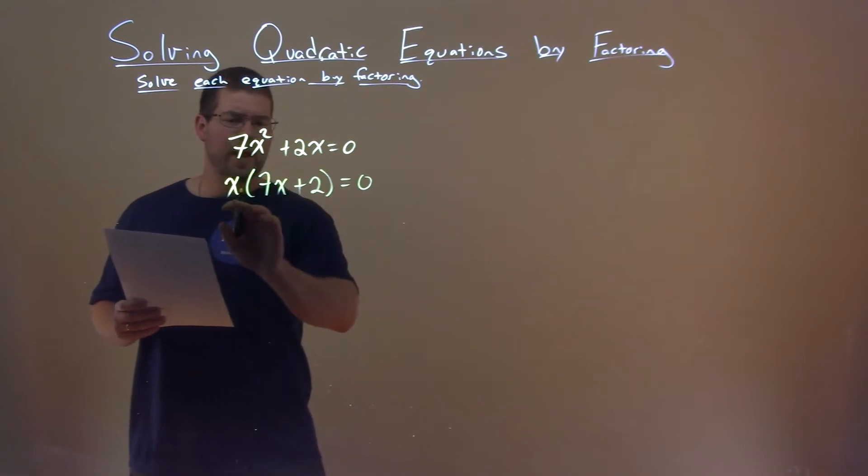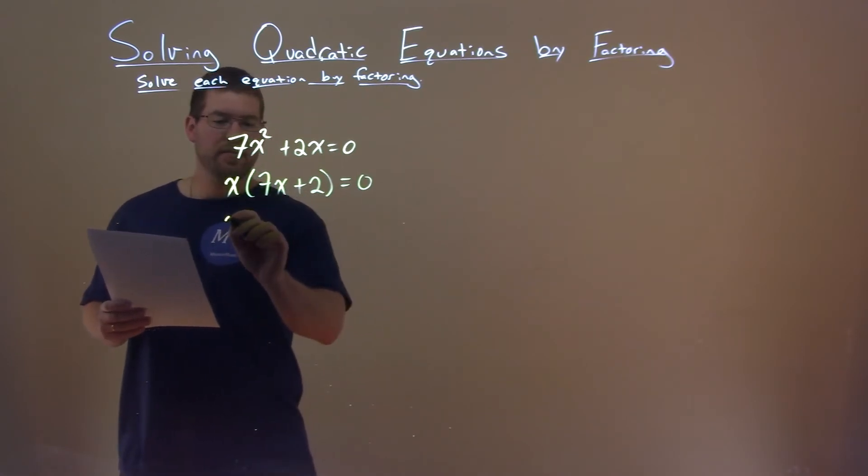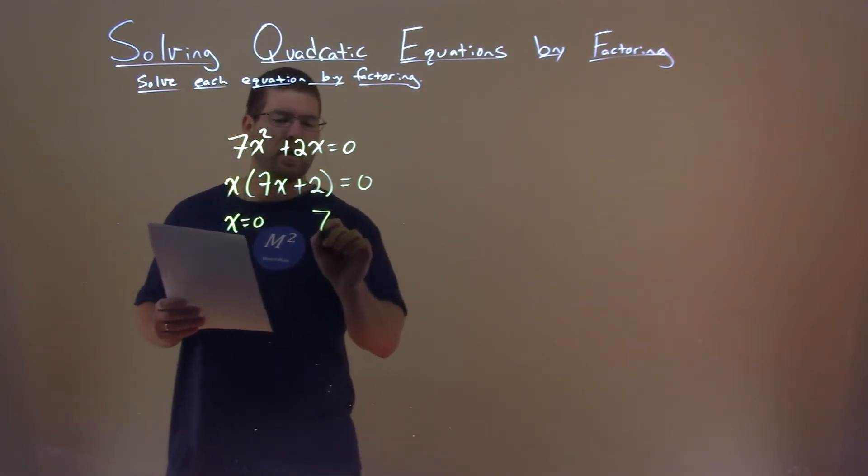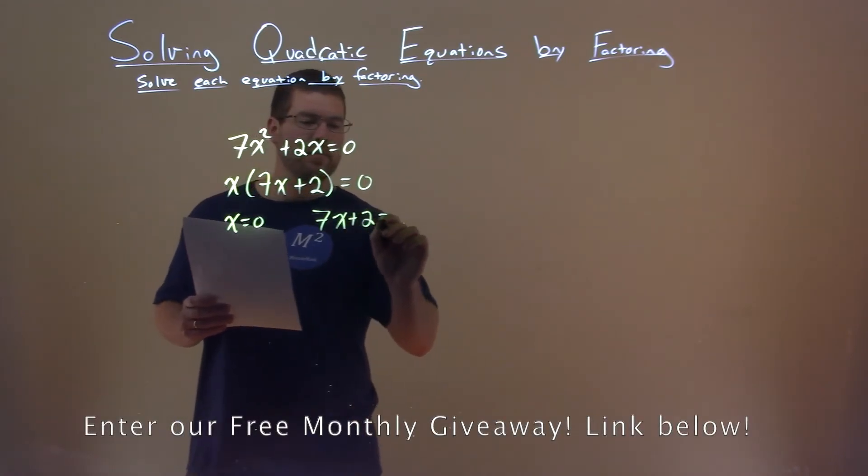So, we set both the x and 7x plus 2 equal to 0 now. So, x equals 0. 7x plus 2 equals 0.